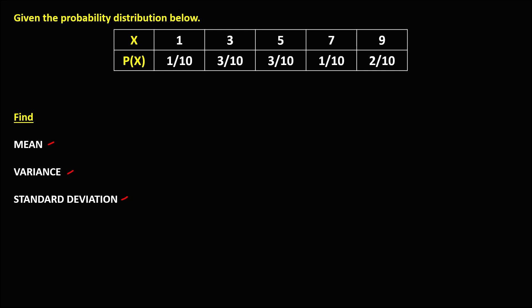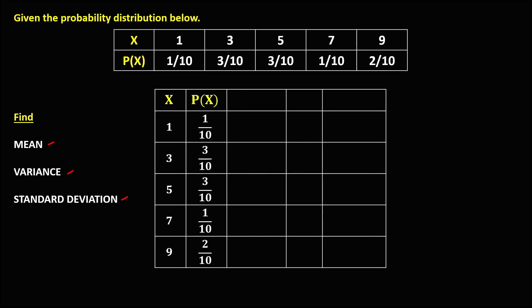To solve this problem in table form, we have x and the probability for every value is 4x. For the column x times p(x), we just multiply these two columns. Since we have a whole number and a fraction, just multiply the whole number to the numerator. So the first row is 1 over 10, then 3 times 3 is 9 over 10, 5 times 3 is 15 over 10, 7 times 1 is 7 over 10, and 9 times 2 is 18 over 10.